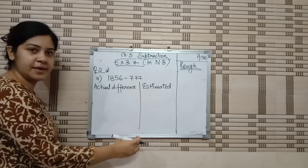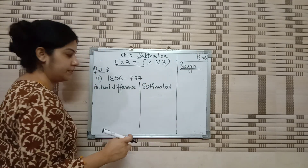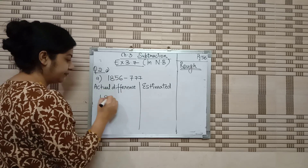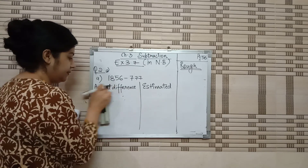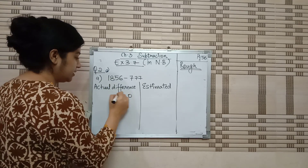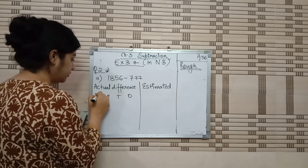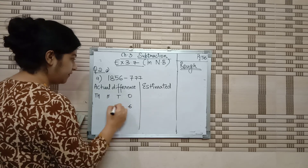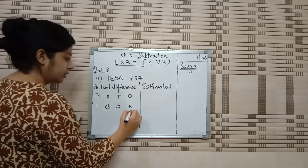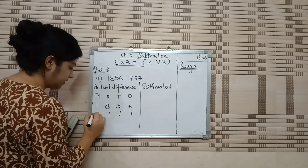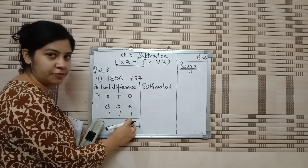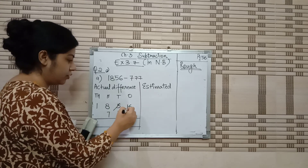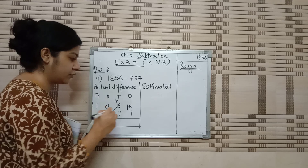You need to make 2 columns in your copy and a rough column in the corner. First, I will write the place values: 1s, 10s, 100s, and 1000s. The numbers are 1856 and 777 — the thousands place is not given for the second number. Now, 6 minus 7 is not possible, so we take a borrow. It becomes 16. Count from 7: 8, 9, 10, 11, 12, 13, 14, 15, 16 — that's 9.